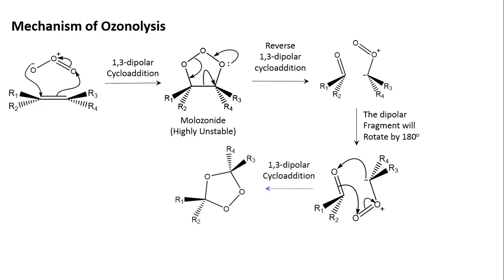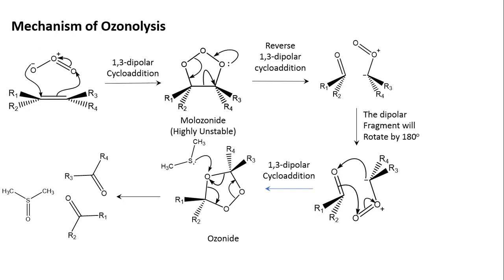The product will be much more stable than molozonide and is known as ozonide. The oxygen between the two carbon atoms will be extracted by the dimethyl sulfide molecule, and the dimethyl sulfide will leave as dimethyl sulfoxide. There will be two remaining carbonyl compounds — aldehydes and ketones — which are the actual products of the ozonolysis reaction. So that's it for today.